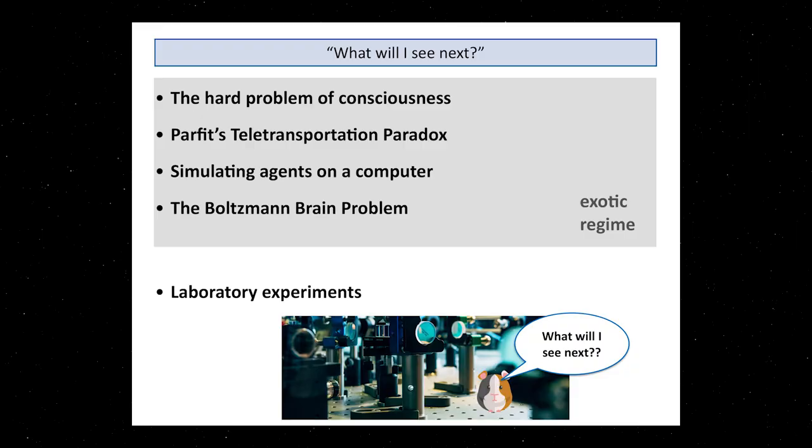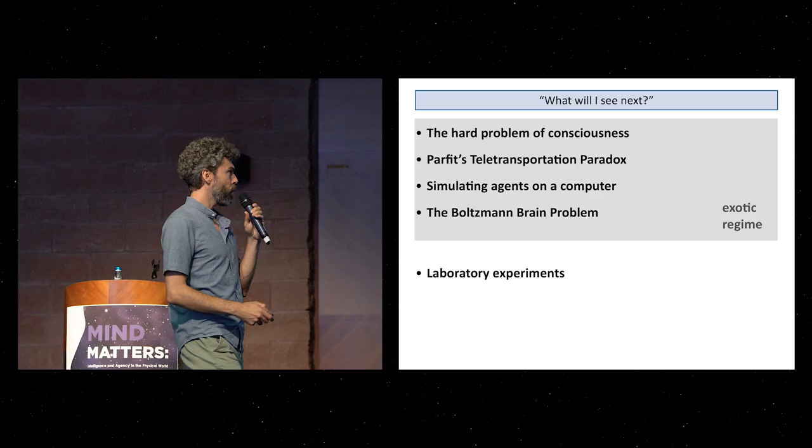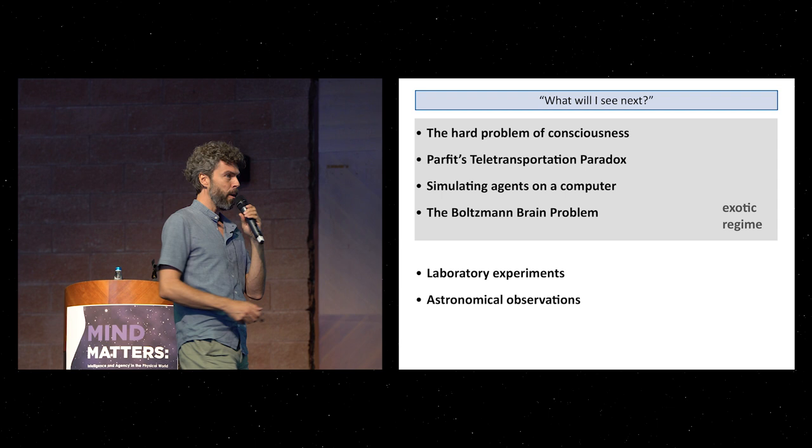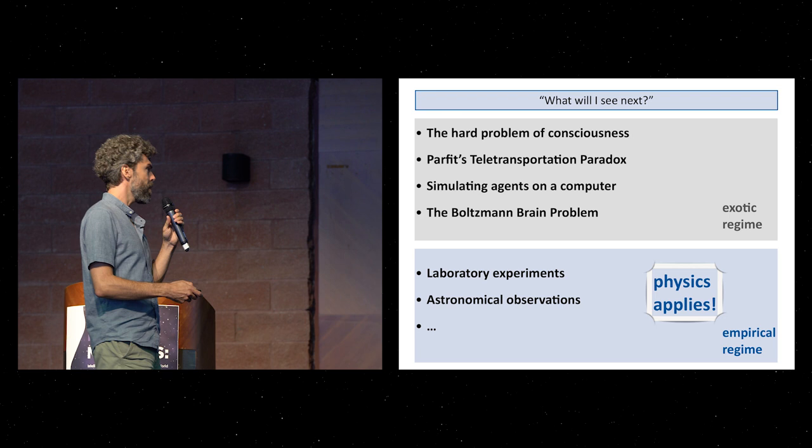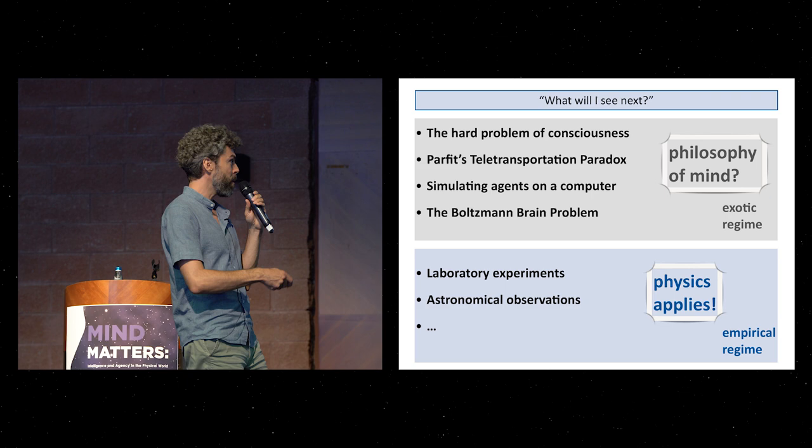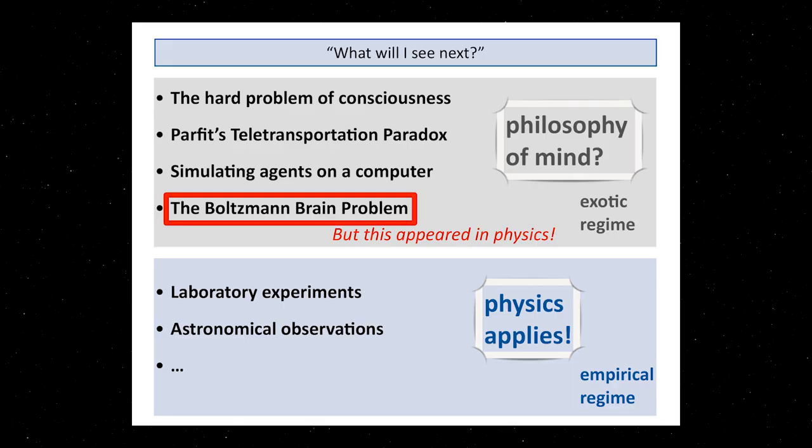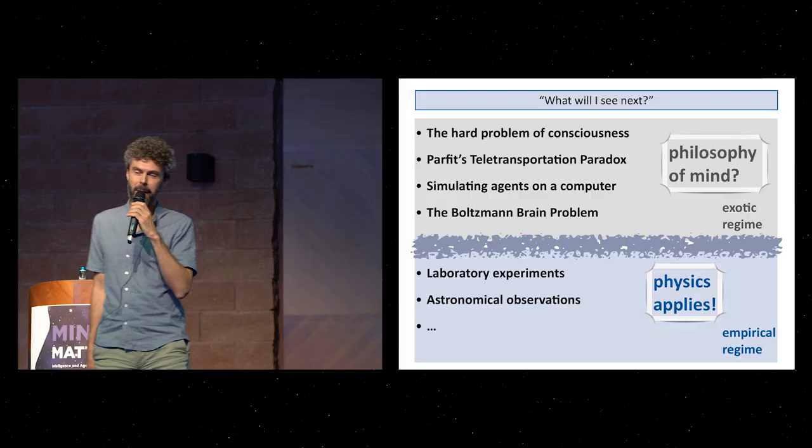Suppose you build this optical table and you press your button and you ask, will I hear the detector click? This is a regime, and also astronomical observations, where we think physics applies. I can ask physics, can it compute a probability that I hear a detector click, whereas in the other regime, probably it's the philosophy of mind. But as you realize, this Boltzmann brain problem appeared in physics. So perhaps the boundary is not so clear cut, it's maybe a fuzzy boundary.